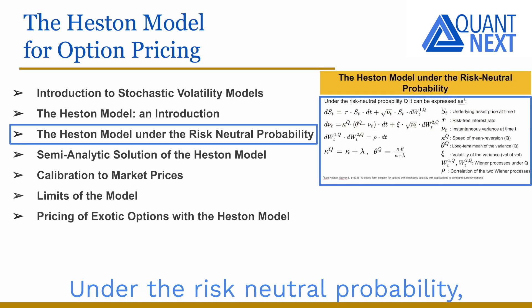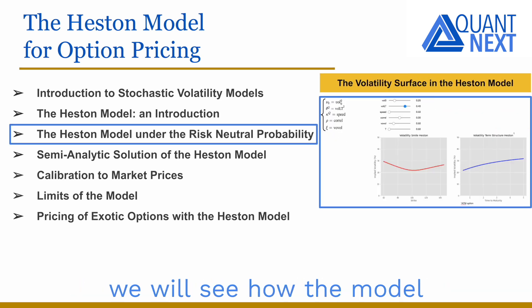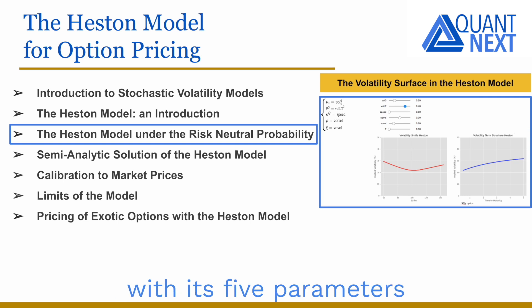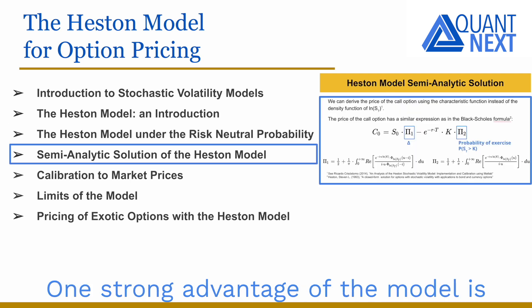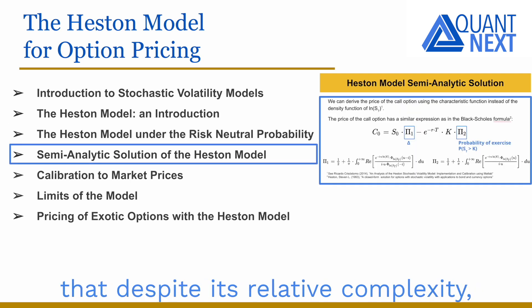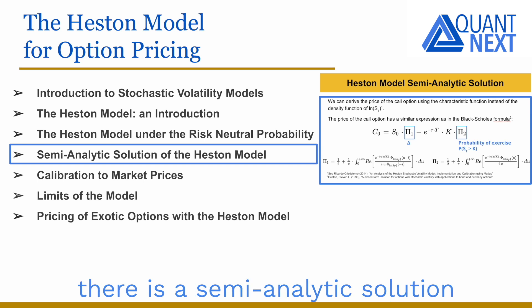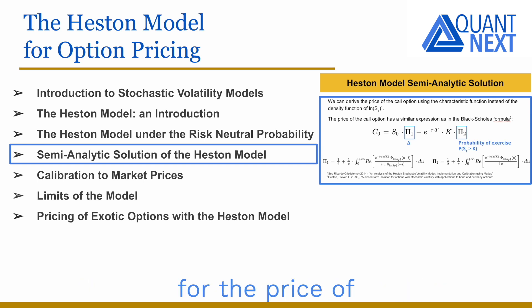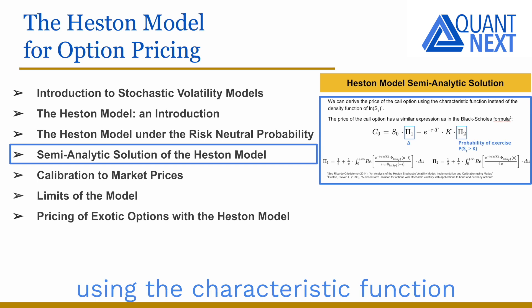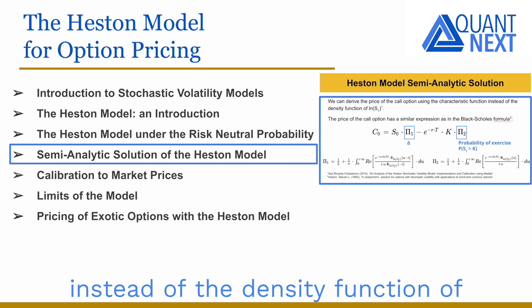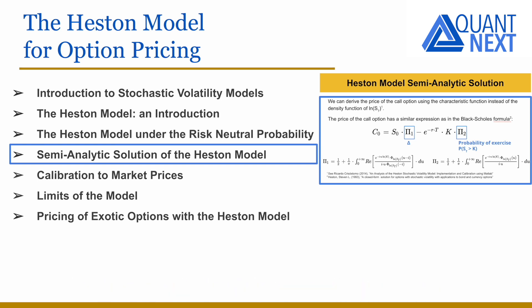Under the risk-neutral probability, we will see how the model with its five parameters allows us to reproduce a large number of volatility surfaces. One strong advantage of the model is that despite its relative complexity, there is a semi-analytic solution for the price of European vanilla options using the characteristic function instead of the density function of the log price.